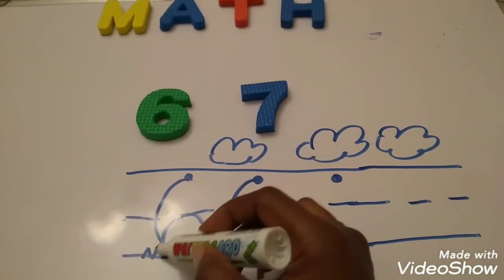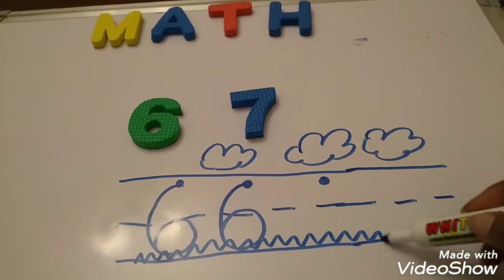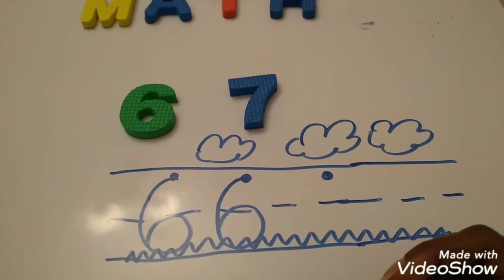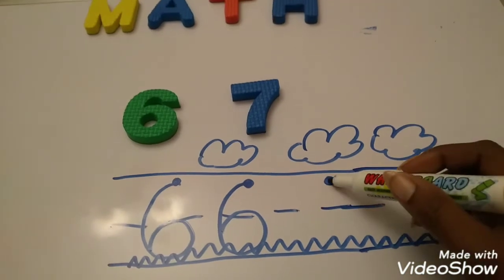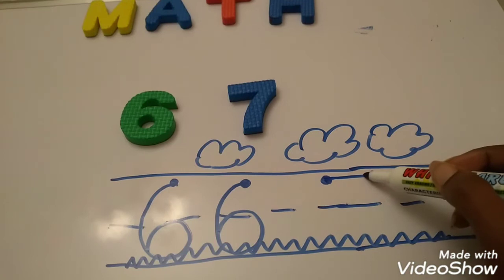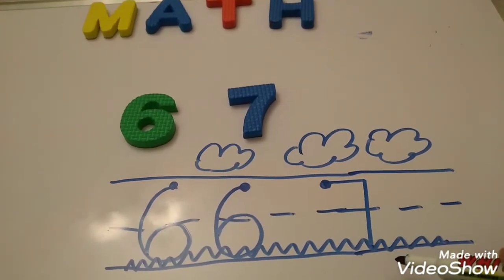And below is our grass. So when we're making the number 7, we always put our pencil or our pen, whatever we're writing with, on the magic dot. We're going to go a sleeping line. And a standing line. See how easy that was?